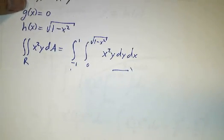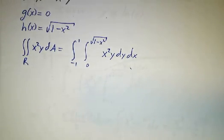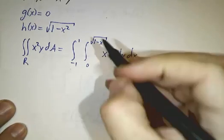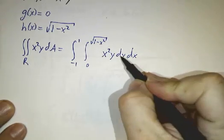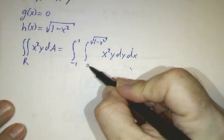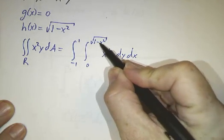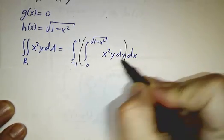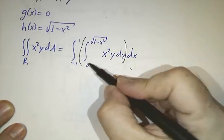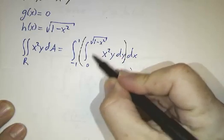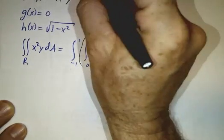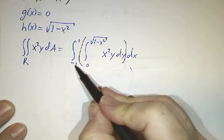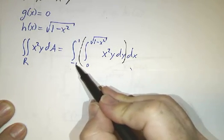And so that means that to write the double integral of x squared y over our region, we first integrate dy from g of x to h of x, and then we integrate that from negative 1 to 1. The limits of integration on y are functions of x. In this case it happens to be a constant function, but still in principle it's a function. The limits of integration on x are numbers.